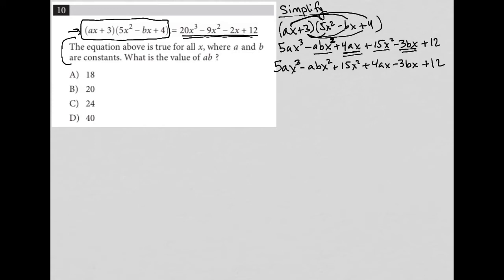So now I'm going to read the question. The equation above is true for all X where A and B are constants. What is the value of A times B? So I'm going to rewrite what I have. So five AX cubed minus ABX squared plus 15 X squared plus four AX minus three BX plus 12 equals the right hand side. 20 X cubed minus nine X squared minus two X plus 12.